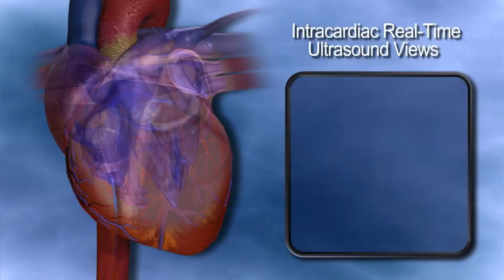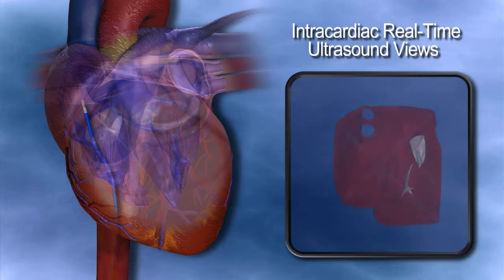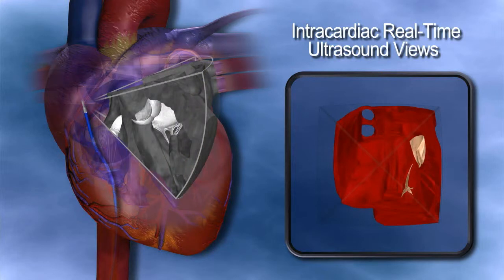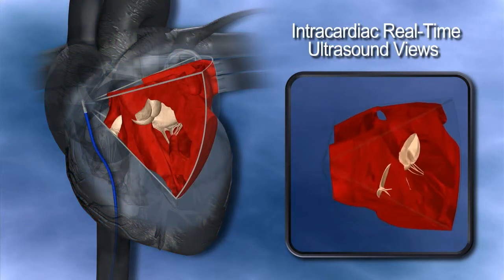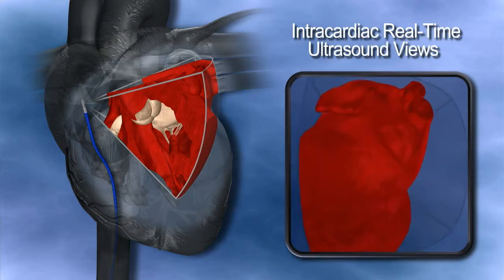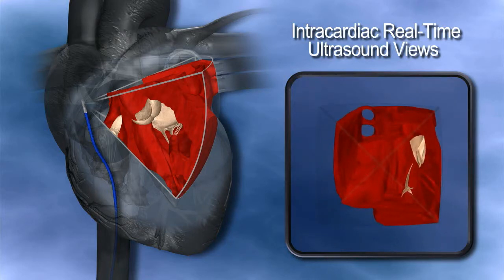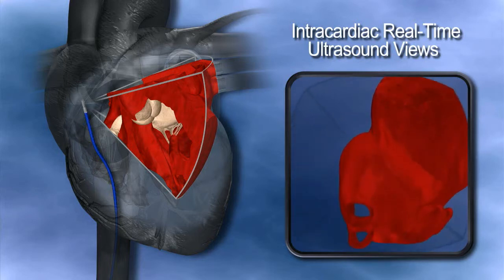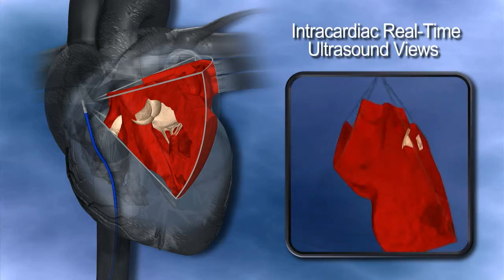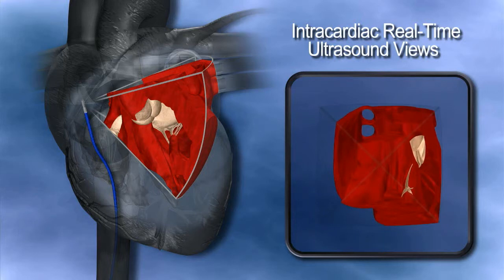The ultrasound catheter would be placed in the right atrium and positioned to point at the target — which might be a mitral valve, aortic valve, or the pulmonary veins. It produces a pyramidal shape view instantaneously while the heart is beating. That image can be manipulated by rotating the volume, cutting into it at any arbitrary angle, and rotating a plane or any image within the volume in real-time — all without having to reposition the catheter.